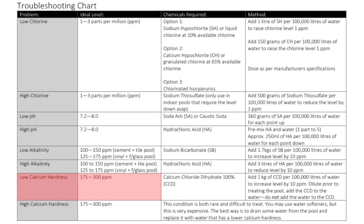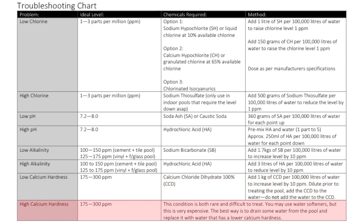If the calcium is low, always remember that the main chemical in water will always be calcium. The ideal range is around 175 to 300 parts per million. What we can use is CCD — add 1 kilo of CCD per 100,000 litres of water to increase the level by 10 parts per million. If the calcium is high, it's very difficult to bring it down if the source water is high in calcium. In the main, calcium levels should range between 80 and 200 parts per million.